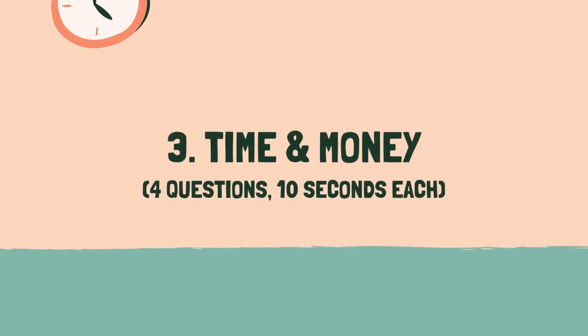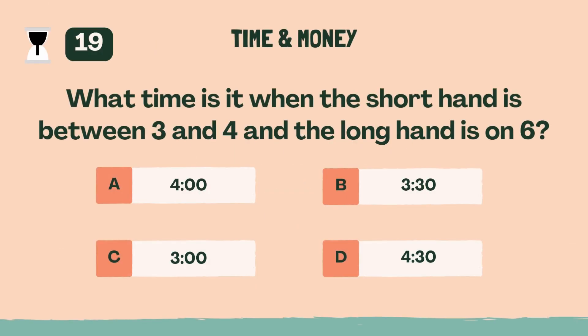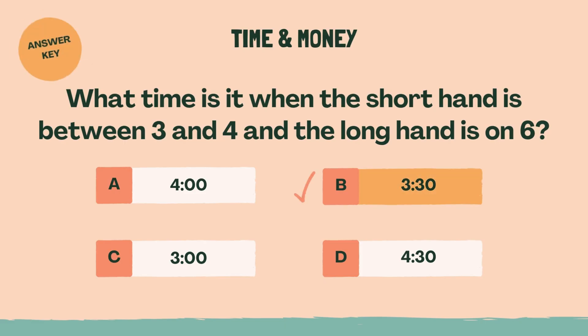Category 3: Time and Money. 3, 2, 1, go. What time is it when the short hand is between 3 and 4 and the long hand is on 6? B, 3:30.